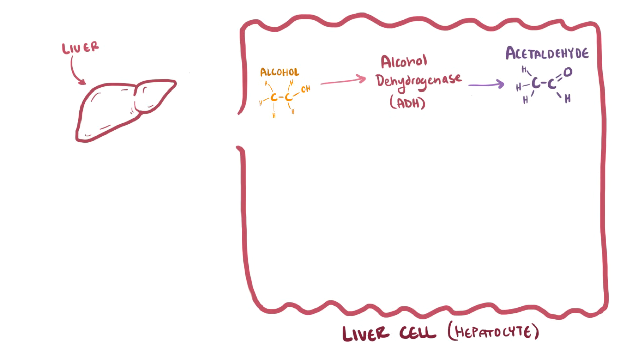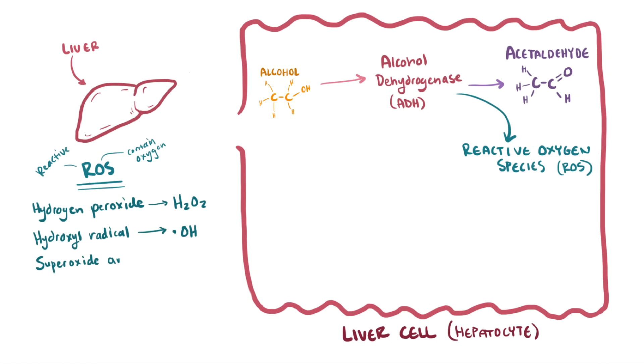Looking back at our pathways, when you make acetaldehyde from ethanol, you also start to generate these ominous sounding compounds called reactive oxygen species. You can probably guess that these guys are super reactive and contain oxygen. Some examples are like hydrogen peroxide, the hydroxyl radical, or the superoxide anion.